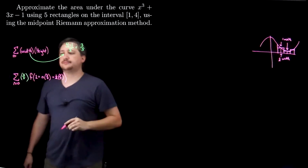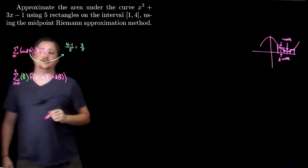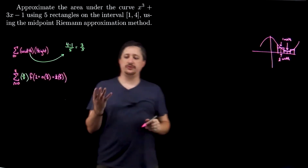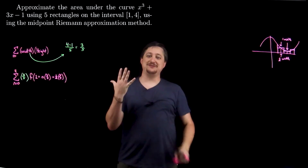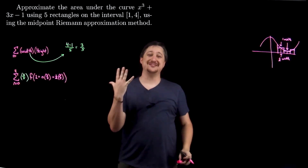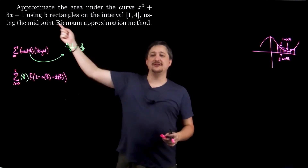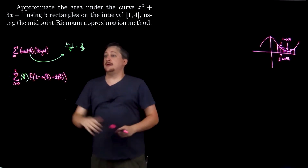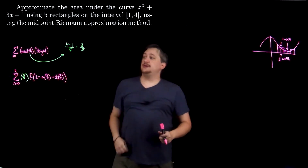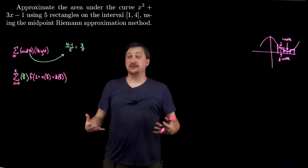When n is zero, the n times 3 fifths term goes away, which means I have my starting value and half of a width over as my starting y value — which is how I get that middle piece. My n is going to go to 4: zero, one, two, three, four — that's five rectangles, which is what I wanted. I now have my formula developed.